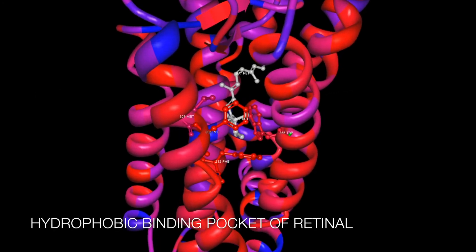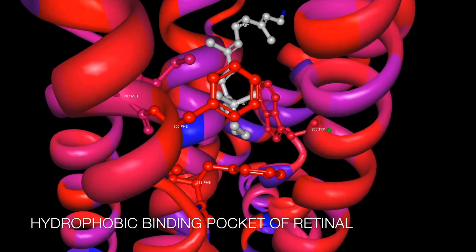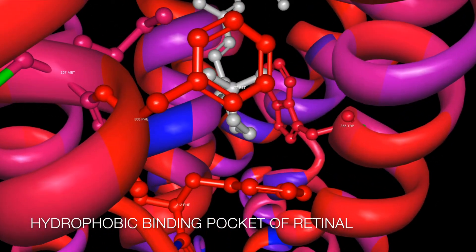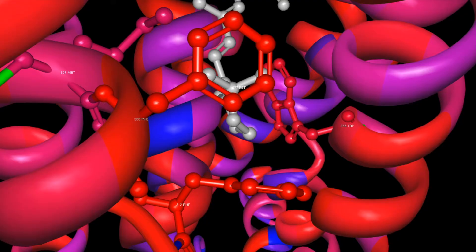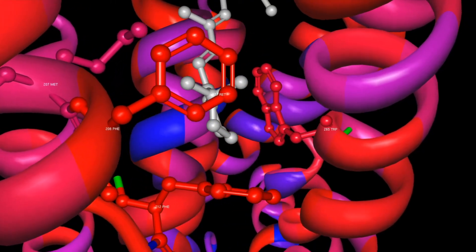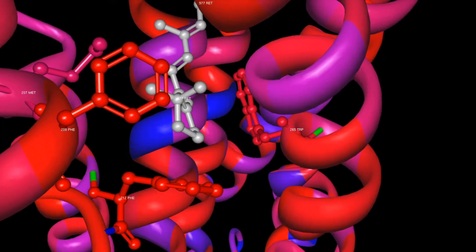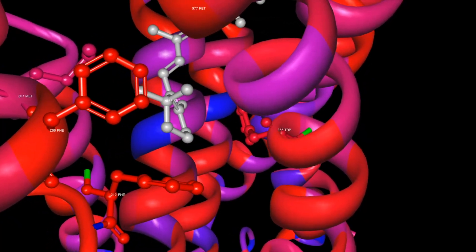Within the transmembrane core, there is a hydrophobic binding pocket for retinal. The hydrophobic residues methionine-207, phenylalanine-208, phenylalanine-212, tryptophan-265, and tyrosine-268 stabilize the nonpolar polyene chain of the ligand.